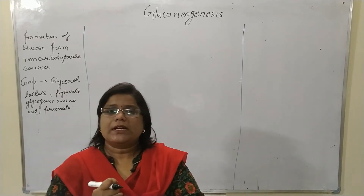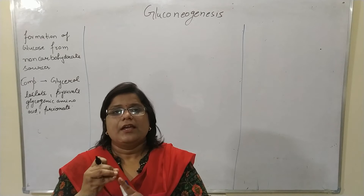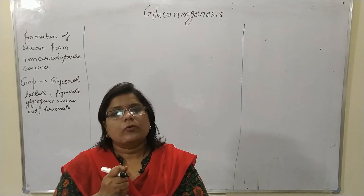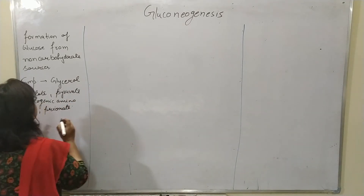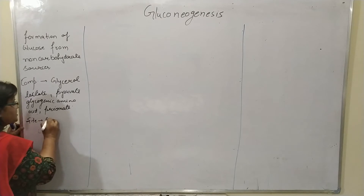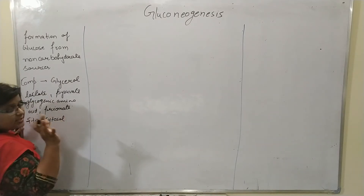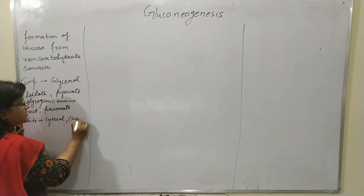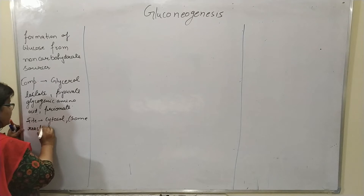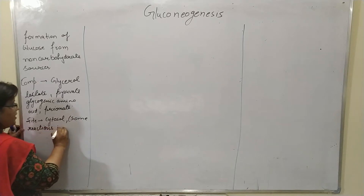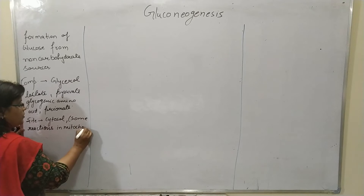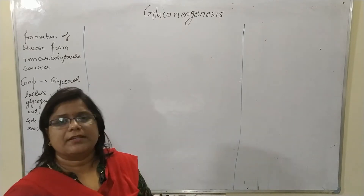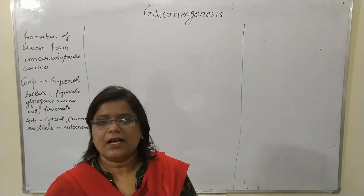What are the sites? Where in the cell is gluconeogenesis primarily involved? The main site is the cytosol. However, some reactions also proceed in the mitochondria.